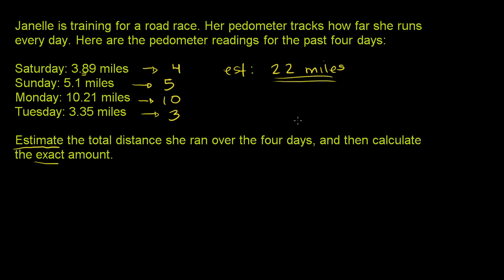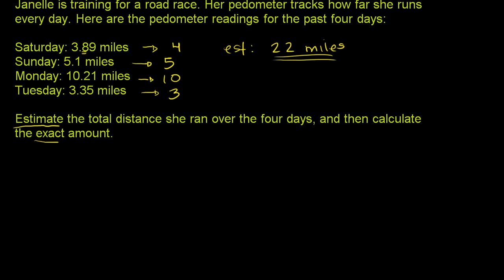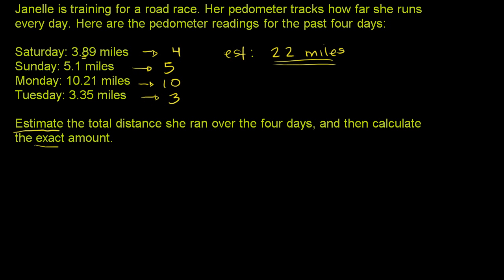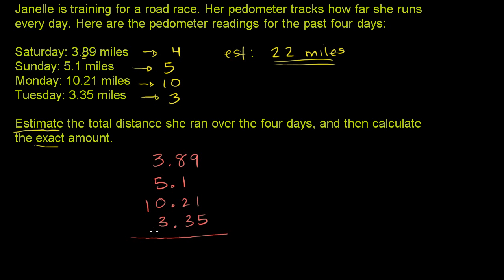Now let's figure out the exact amount she ran. When you're adding decimals, you want to line up the decimal point. So we're going to add 3.89 plus 5.1, plus 10.21, plus 3.35.